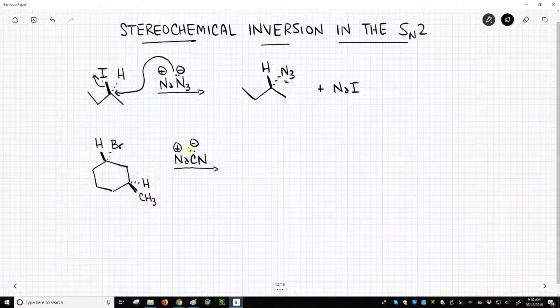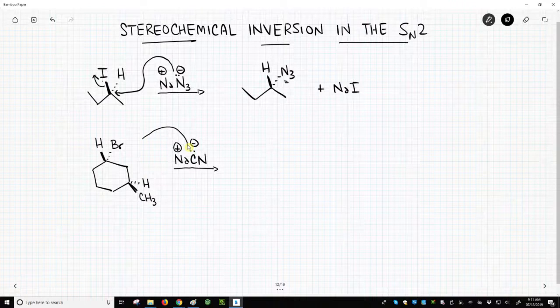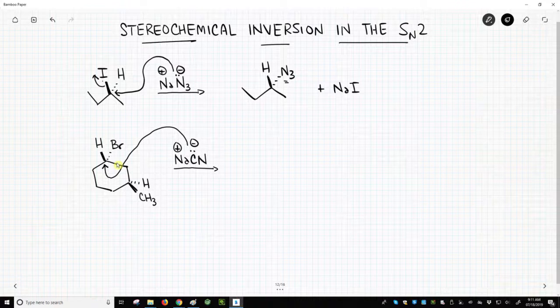Here's another example below it. Cyanide is one of our fantastic nucleophiles. It's going to attack. In this case, it's going to attack from the top face because our leaving group is on the bottom face. It's hashed.